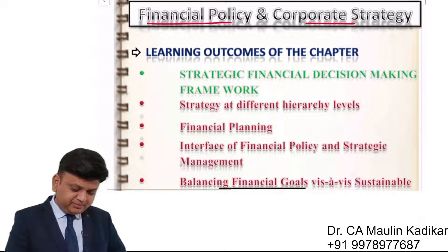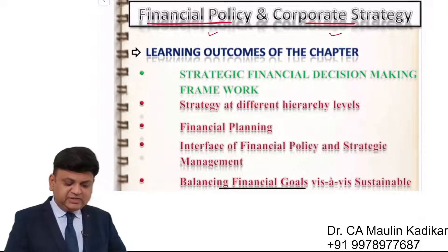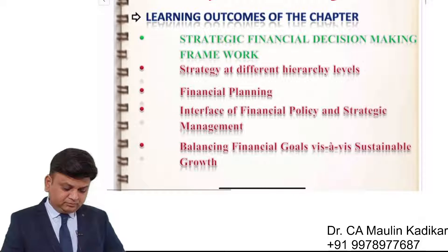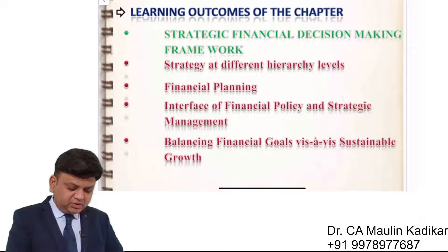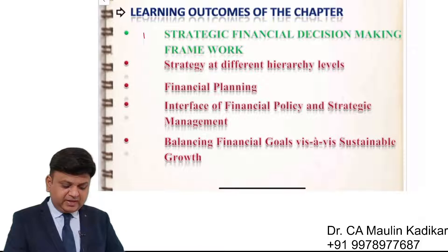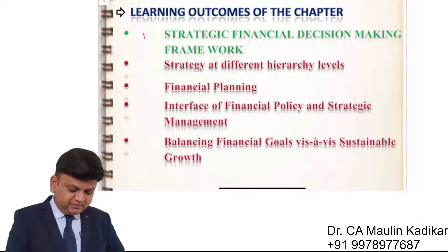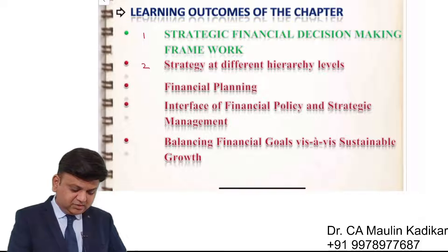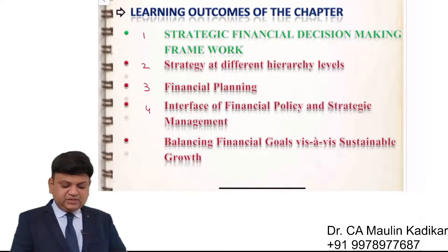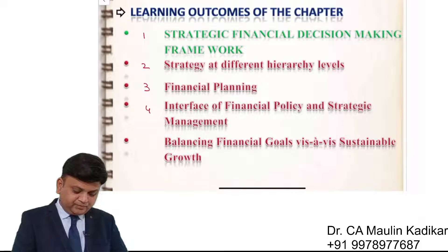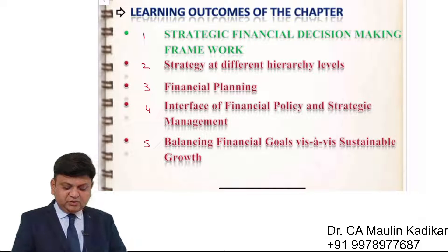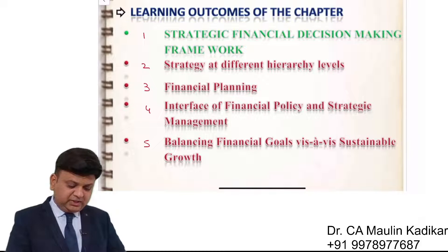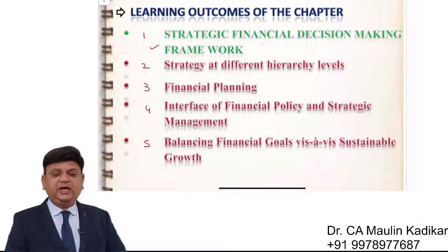The learning outcomes of the chapter on Financial Policy and Corporate Strategy include: first, strategic financial planning - that is financial decision-making and framework; second, strategy at different hierarchy levels; third, financial planning; fourth, interface between financial policy and strategic management; and fifth, balancing financial goals vis-a-vis sustainable growth.